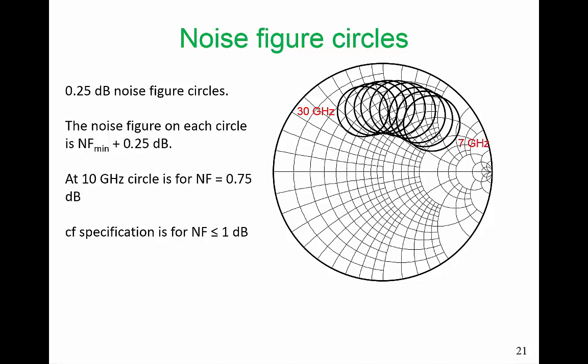Another matter that helps us make the trade-offs is to plot the noise figure circles at a particular offset from NF-min. And what I've plotted here are the 0.25 dB noise figure circles. If gamma-S, let's go at 30 GHz here, if gamma-S is anywhere within this circle, we will have made a trade-off that is no more than 0.25 dB noise figure worse than the minimum possible noise figure. And at 7 GHz, well, we're going to make a trade-off of 0.25 dB if we're anywhere on that circle.